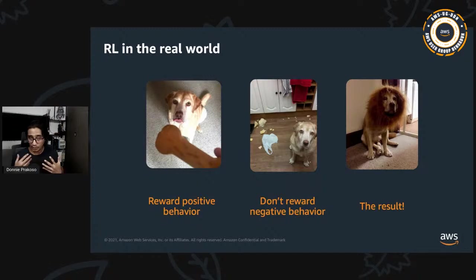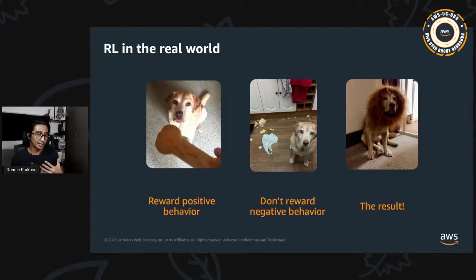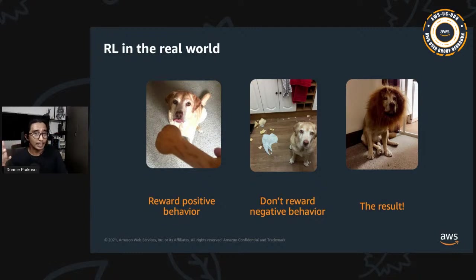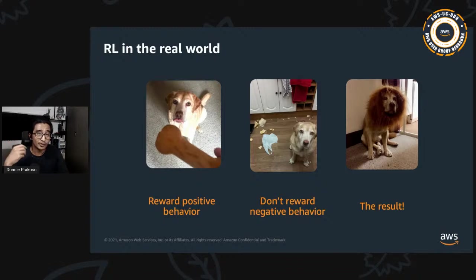Let's look at a concrete example to illustrate how reinforcement learning works. Reinforcement learning is built on the idea of reward and penalty. Think about the approach used to train a pet — we give cookies for good behavior and no cookies for bad behavior. During this training we instruct our pet with simple actions like sit, stay, or roll. The goal is for your pet to behave the way you want.